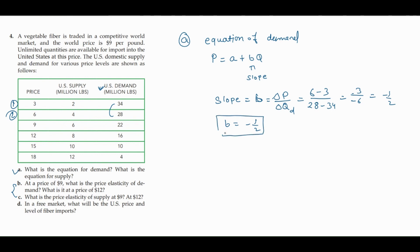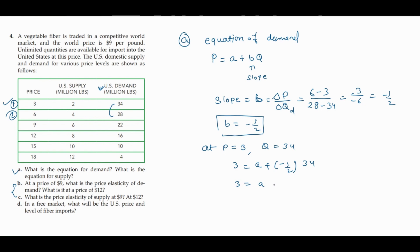The slope is negative because we know the demand curve is downward sloping. Now to find the intercept a, we can use any data set point. I'm going to use the first one: at p equals 3, quantity demanded is 34. So putting these values in: 3 equals a plus (negative 1/2) times 34. Solving: 3 equals a minus 34/2, which means 3 equals a minus 17.